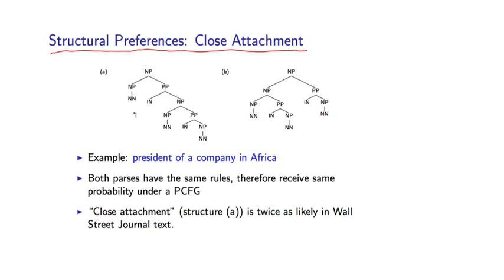This is a phenomenon called close attachment that I'm going to show you on this slide. So let's assume we have some sequence of words, noun, preposition, noun, preposition, noun. For example, we might have president of a company in Africa. And again, we have a prepositional phrase attachment ambiguity here because this prepositional phrase in Africa could attach to the most recent noun, company, or it could attach to this more distant noun, president. So we either have a company in Africa or we have a president in Africa. That's the ambiguity.